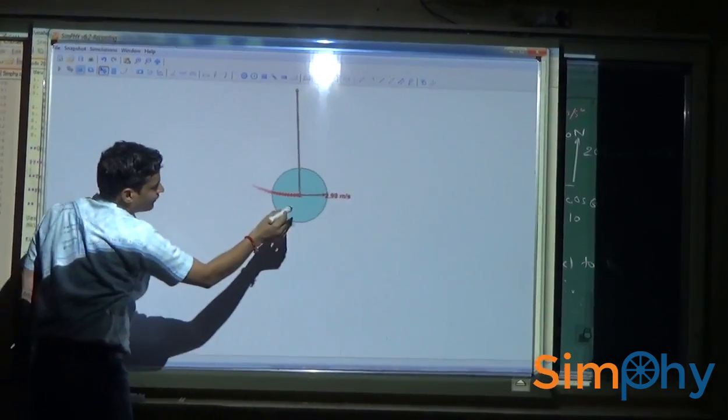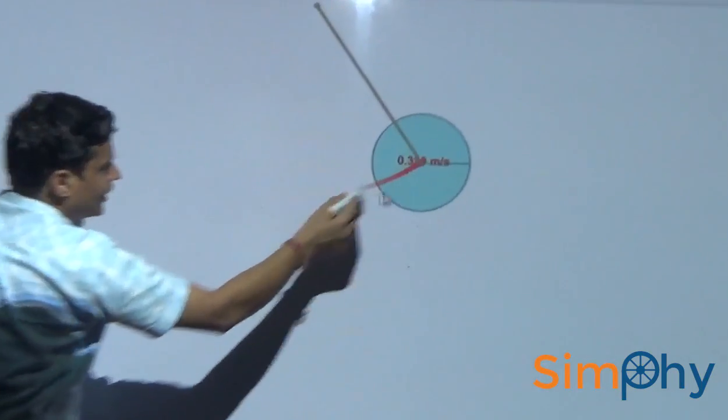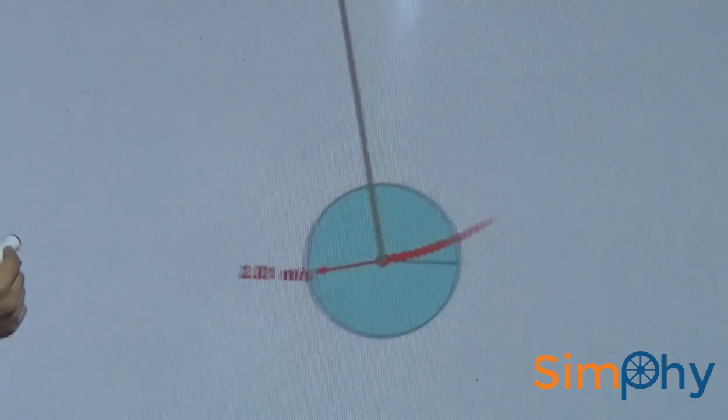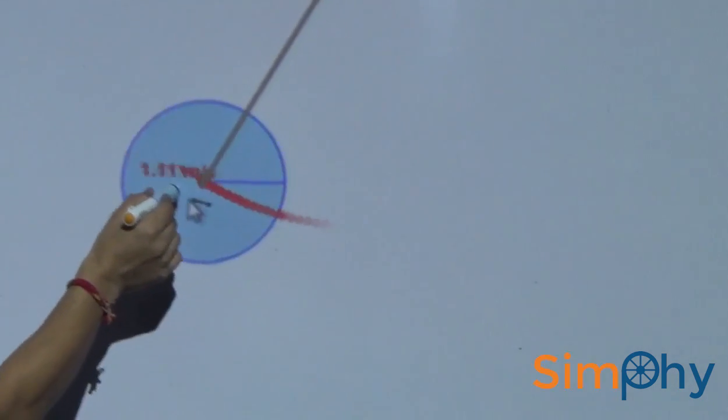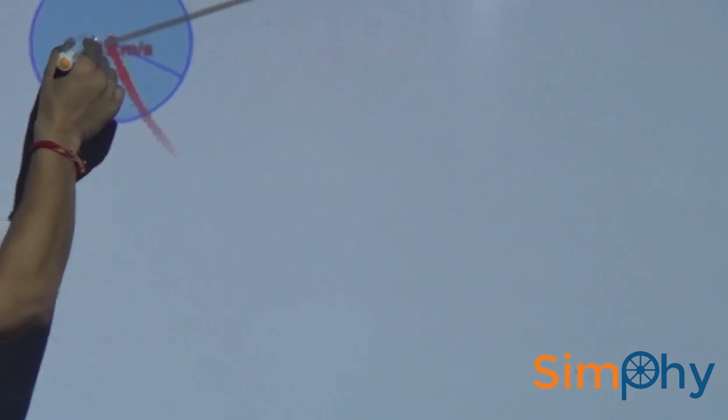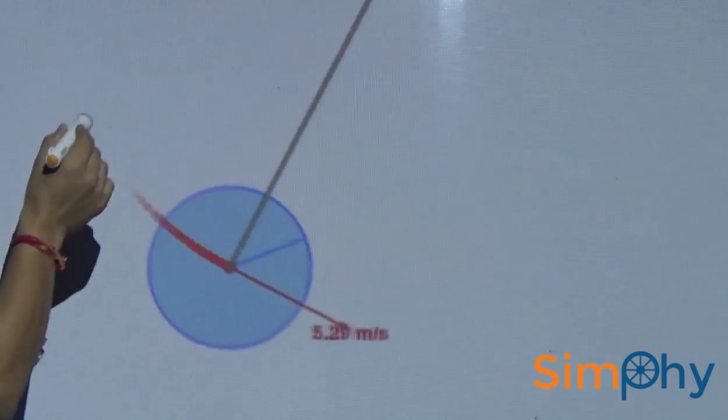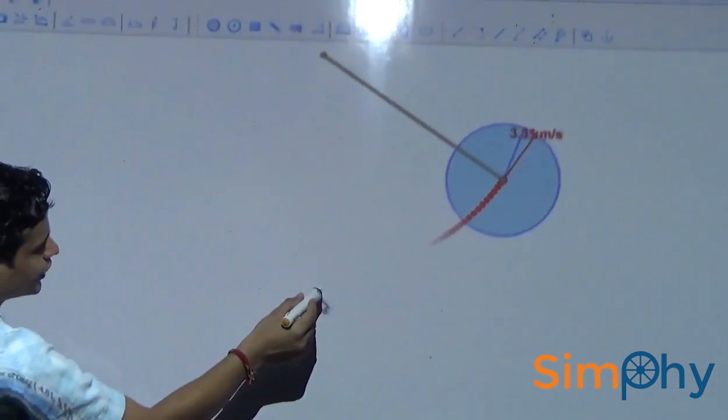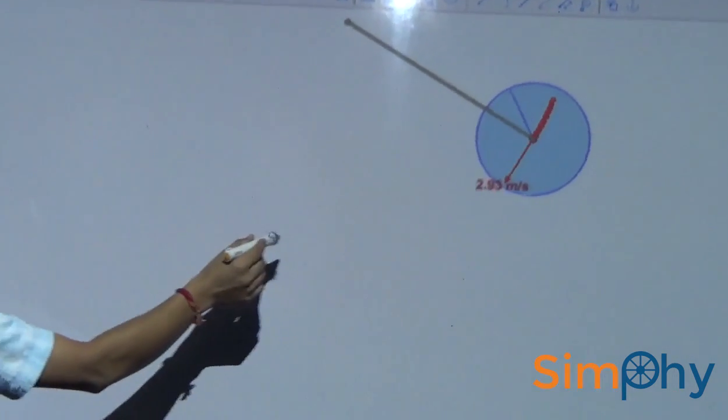You can clearly observe the variation of velocity with time. Let us increase amplitude. On increasing amplitude maximum velocity is also increased.